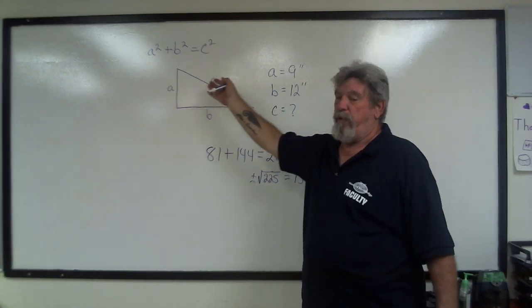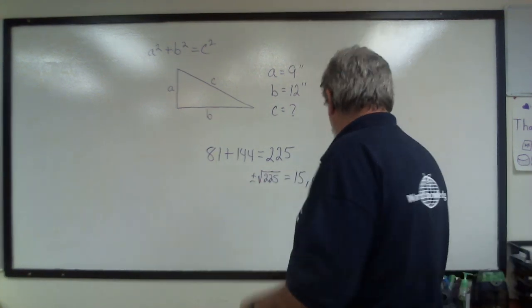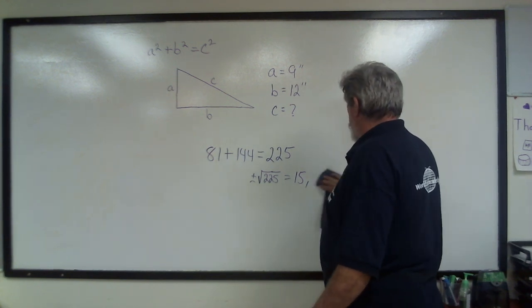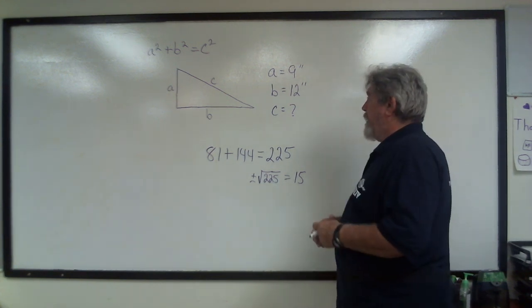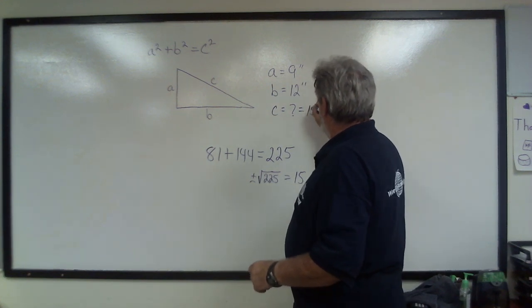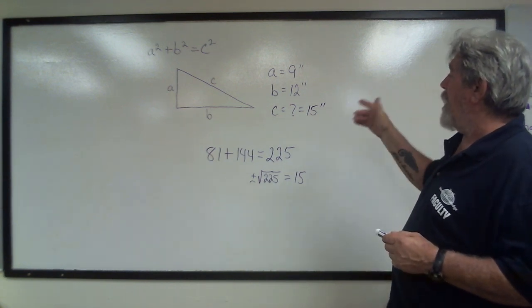Well, we have a definite line there and we know that it's not negative because it can't be negative. So we can just eliminate the negative half of it. We're not going to even worry about that, and we're just going to go with 15. So that's telling us that C equals 15 inches. Seems reasonable: 9, 12, and 15.